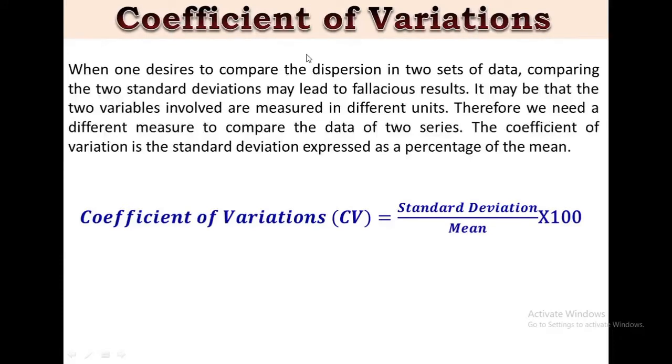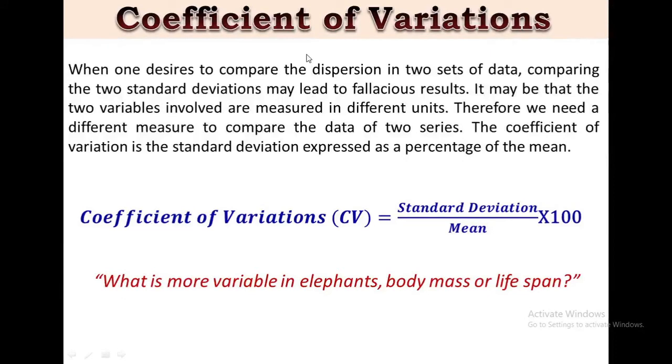We can understand the importance of coefficient of variation with this example: If we want to know what is more variable in elephants, its body mass or lifespan, then standard deviation is not very informative because mass is measured in kilograms and lifespan is measured in years. Only coefficient of variation would allow us to make this comparison.